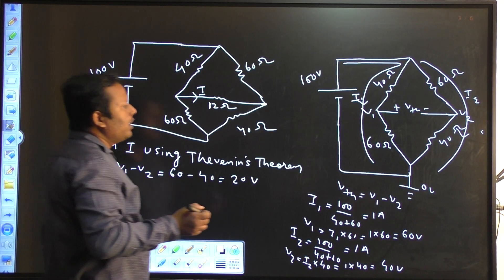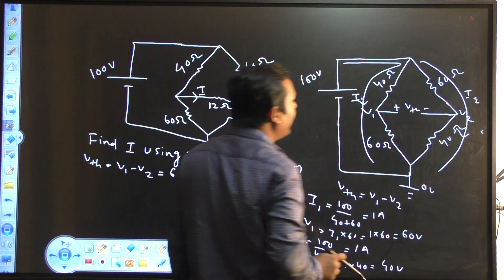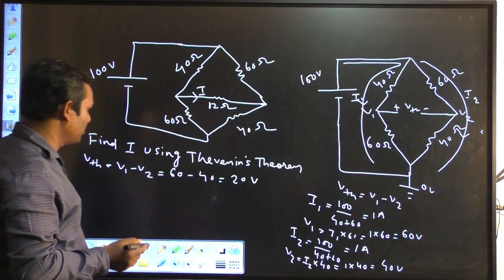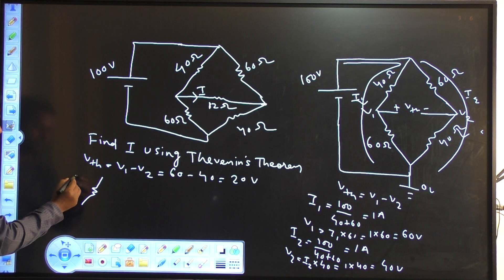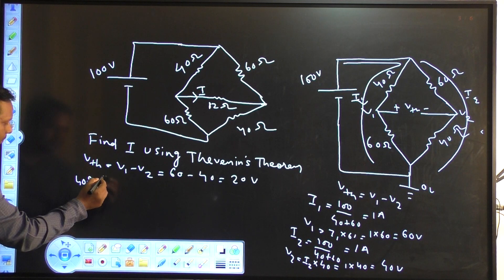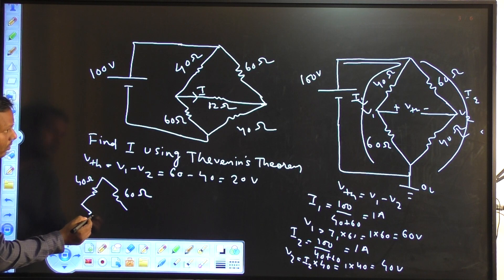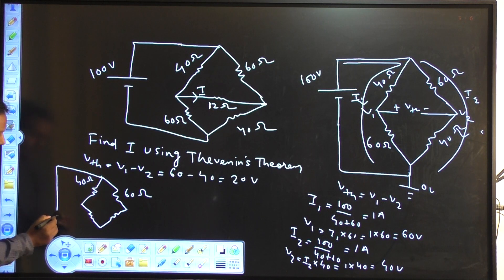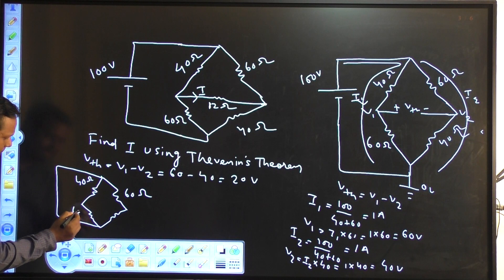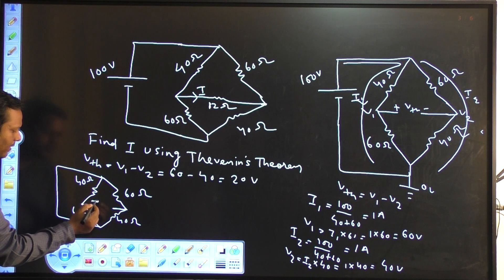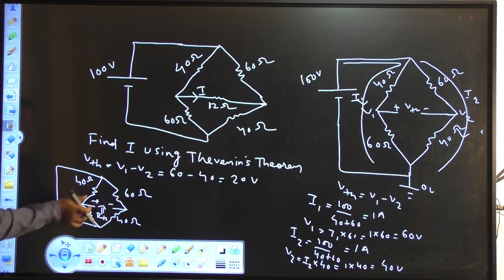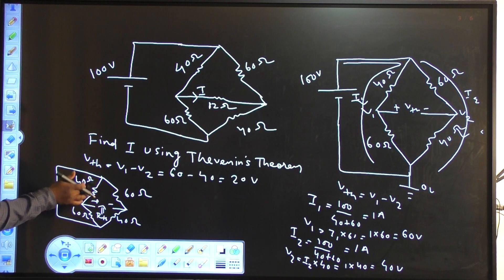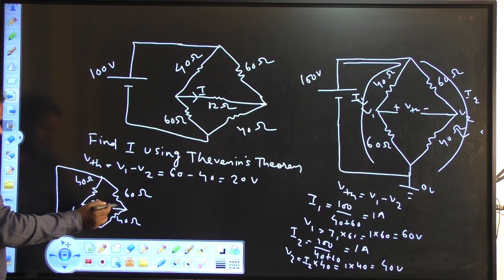Then I have to find the Rth. From this open-circuited terminal I have to see the equivalent resistance by short-circuiting the ideal voltage source, then redraw the circuit. If I short-circuit these two points, then it is clearly seen that your 40 and 60 ohm are connected in parallel, because these two points are shorted. So this 40 and 60 — these two resistors are connected in parallel. And this 60 and 40 also connected in parallel, because your end points are the same.